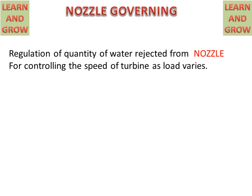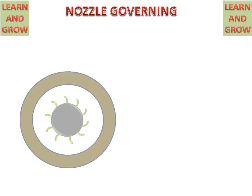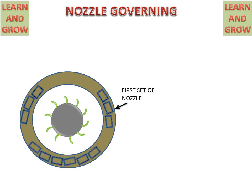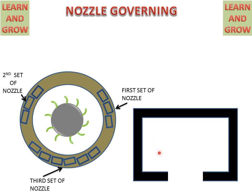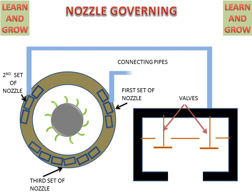Firstly we will discuss about parts of the nozzle governing process. We have an impulse turbine with different sets of nozzles — this is the first set of nozzle, this is the second set of nozzle, and below is the third set of nozzle. These nozzles provide water or steam to the impulse turbine. There is an inlet for steam and valves for operating steam, connected to the impulse turbine nozzle sets with pipes. The first, second, and third sets are each connected.